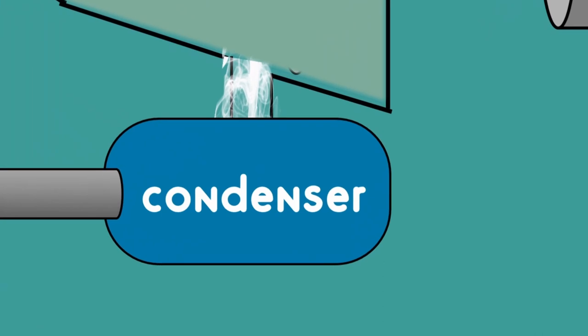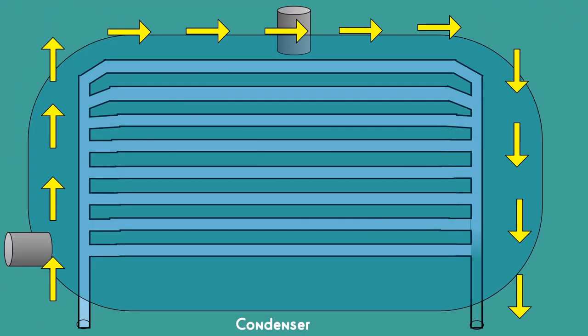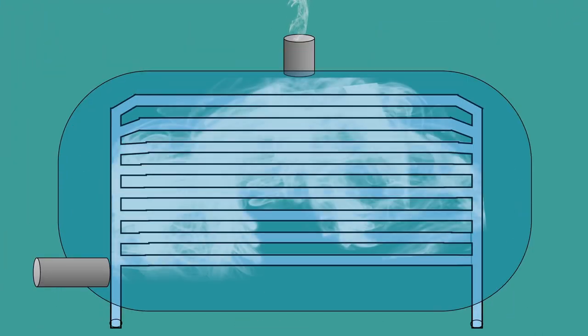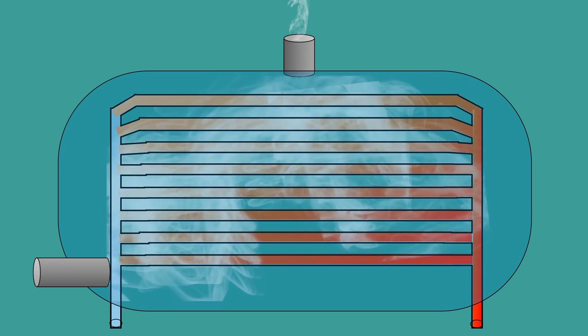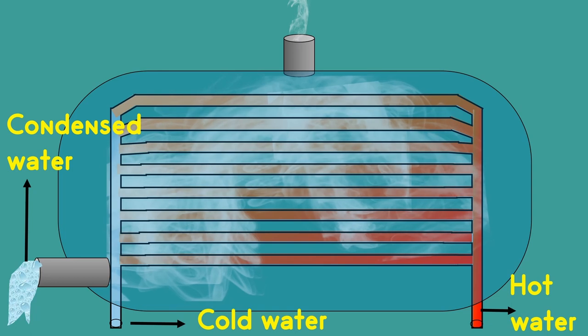In the condenser a stream of cold water flows through the tubes. When the hot steam enters the condenser the heat is transferred from this high temperature steam to the cold water. As a result steam cools and condenses to water, whereas the temperature of cold water increases due to this heat exchange process.